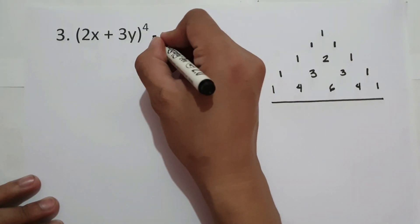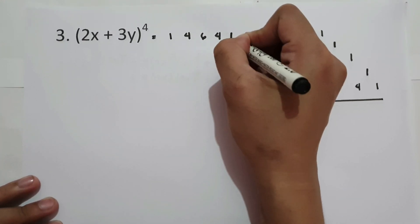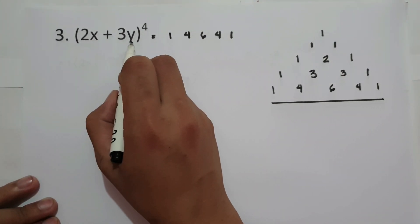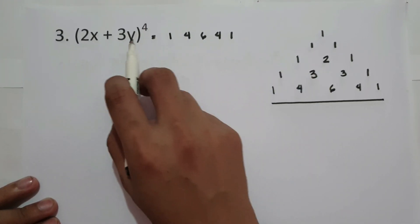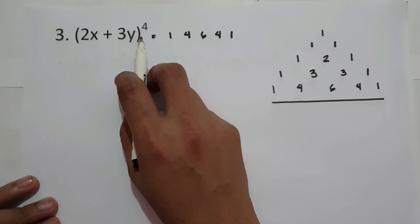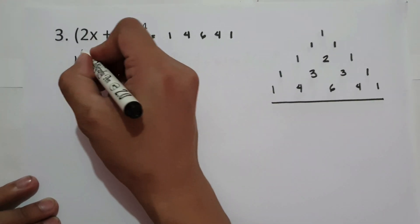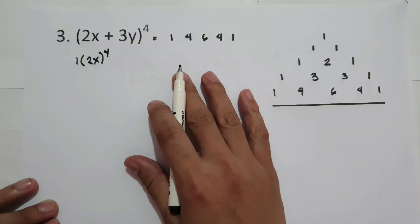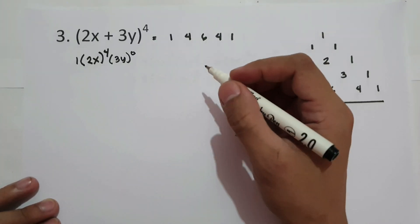The coefficients are 1, 4, 6, 4, and 1. The first term is 2x and the second term is 3y. The first term is raised from the highest exponent down to the lowest, and 3y is raised from 0 up to 4, or from lowest to highest. So we have 1 times (2x) raised to 4, then (3y) raised to 0.